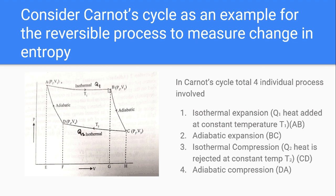In the Carnot cycle diagram: A to B is isothermal expansion, B to C is adiabatic expansion, C to D is isothermal compression, and D to A is adiabatic compression — four processes. These four processes together make a cyclical process called the Carnot cycle, with four individual processes.